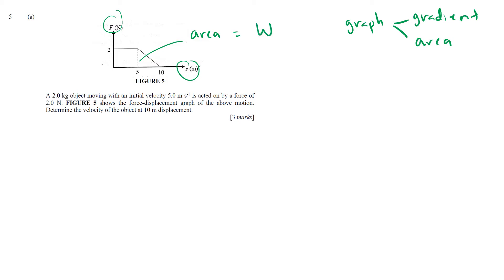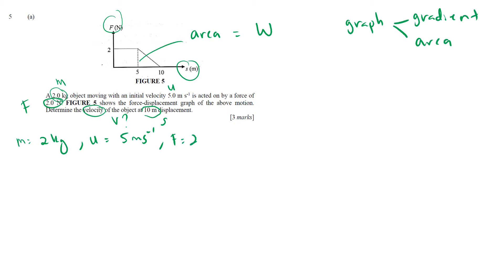Reading the question: a 2 kg object moving with initial velocity 5 m/s is attacked by a force of 2 newtons. Figure 5 shows the force-displacement graph of the above motion. Determine the velocity at 10 meters displacement. So let's list all the information: mass = 2 kg, initial velocity u = 5 m/s, force F = 2 N, displacement s = 10 m. We need to find v.